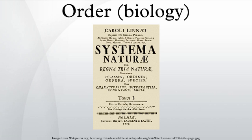For example, the walnut and hickory trees belong to the family Juglandaceae, which is placed in the order Fagales. What does and does not belong to each order is determined by a taxonomist, and similarly for the question of whether a particular order should be recognized at all. Often there is no exact agreement, with different taxonomists each taking a different position.